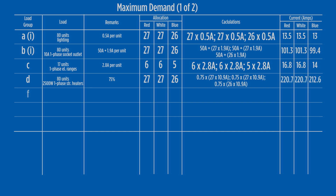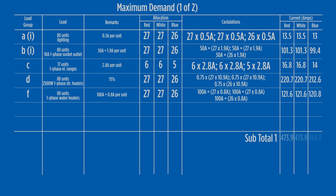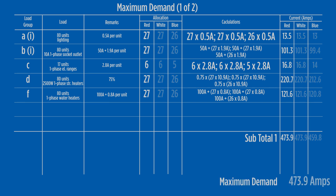Load group F allows 100 amps plus 0.8 amps for each hot water system per unit. The calculation for hot water systems comes to 121.6 amps. At this point, the loading associated with individual units is complete. The maximum demand value sits at 473.9 amps.